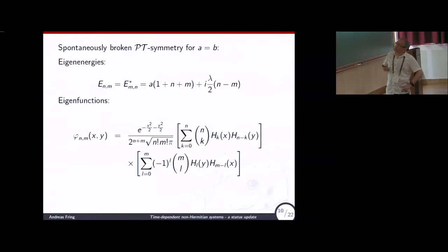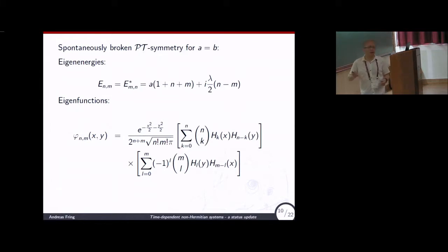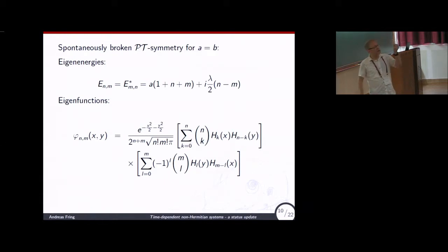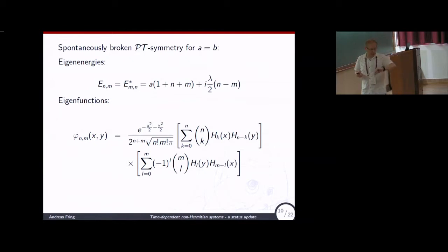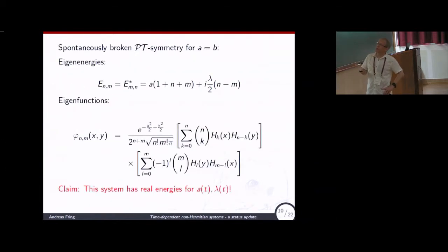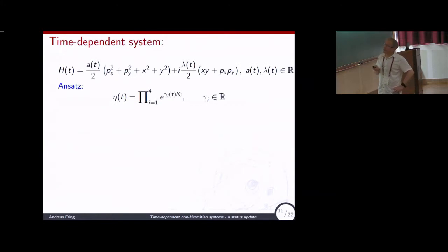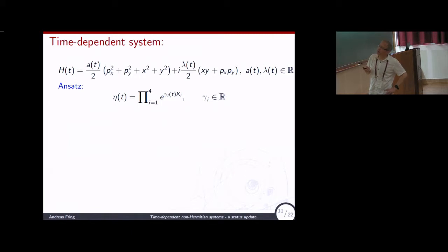We want to look at the regime a = b. In the time-independent system, you can easily calculate the energies and eigenstates — and you see it's complex, except for n = m, which is just one value. So this system has the same feature as our two-dimensional system. The claim is it becomes meaningful when I switch on time. Here's the time-dependent system: a is time-dependent, lambda is time-dependent. And this is where the algebra is useful — we make an ansatz in terms of these generators.